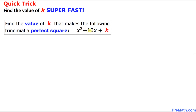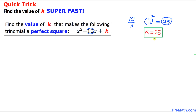For this trinomial, we want to find the value of k. Let's focus on the middle number, the coefficient of x, which is 10. Divide this number by 2 — we are going to get 5. And then the final step is to square it, so that is going to give us 25. Thus k equals 25 is our answer. Just keep in mind that the leading coefficient of this trinomial is simply 1.